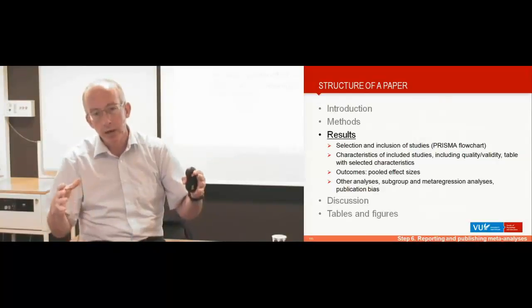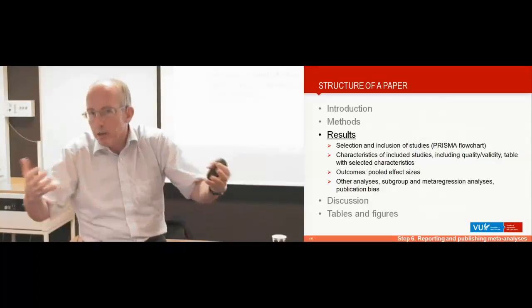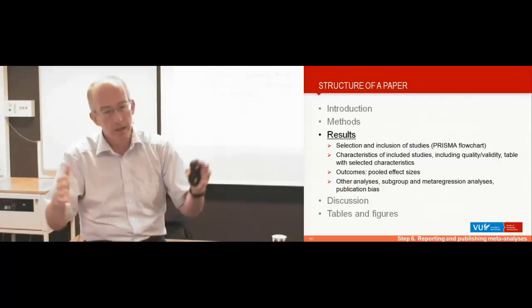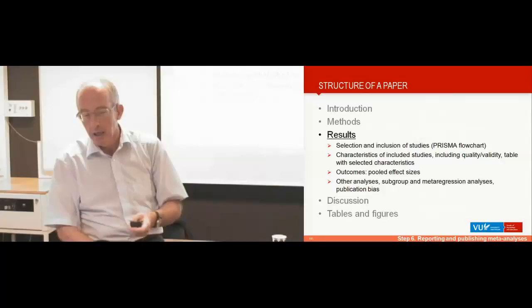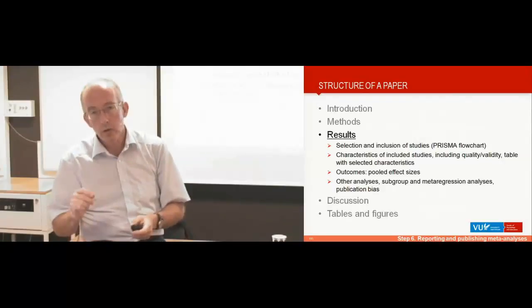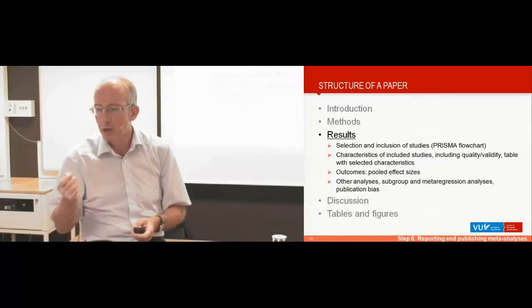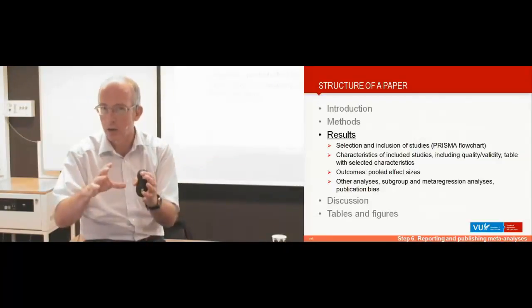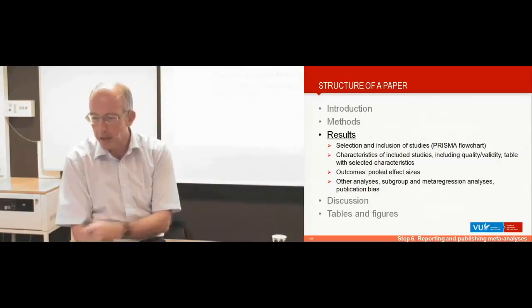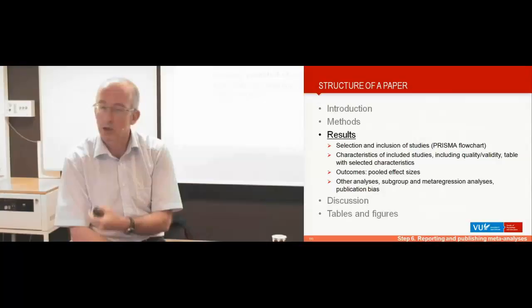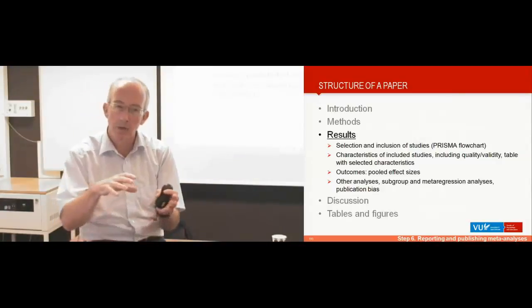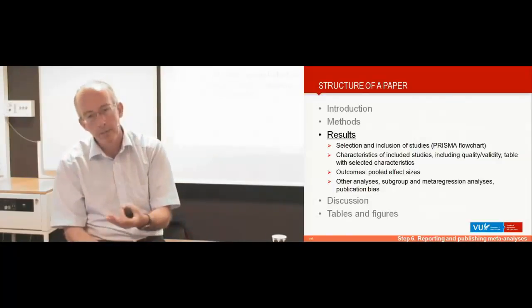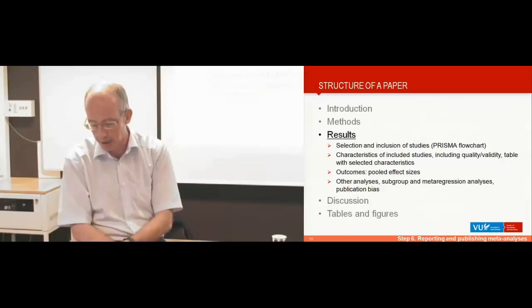Then you have to describe the characteristics of the 22, for example, included studies. Present the table of the studies you've included with the major characteristics. In the next paragraph, and that's the core of the meta-analysis, you report the outcomes for the pooled effect sizes. That's the core of your meta-analysis. And then finally, you report the results of the other analyses, the subgroup or meta and meta-regression analysis, publication bias, maybe you're focused on a subgroup of studies, or maybe you have removed some studies, etc.